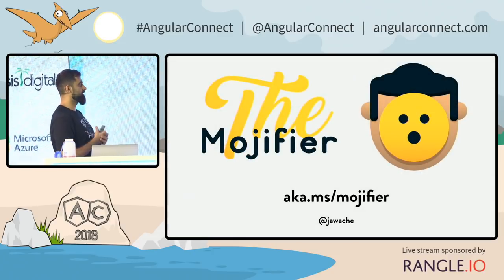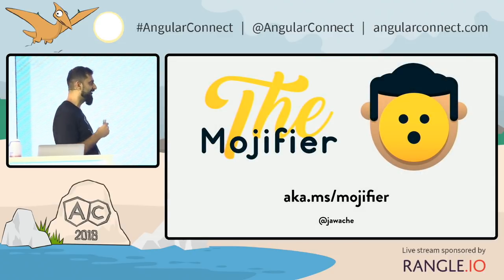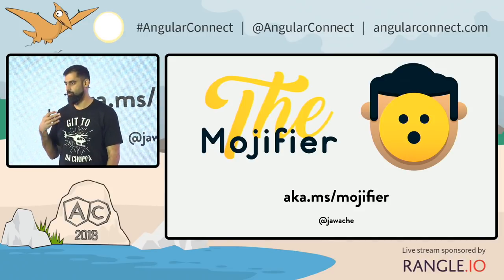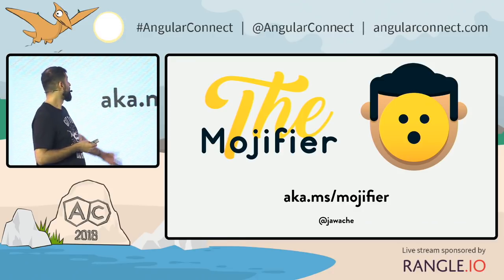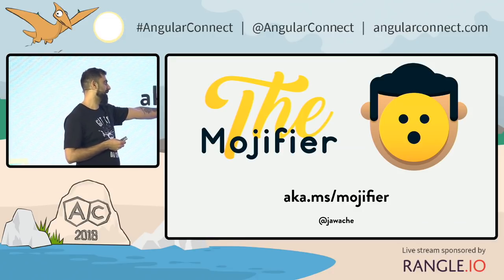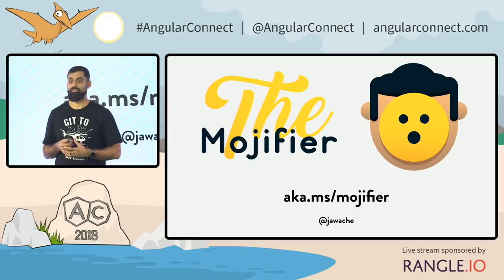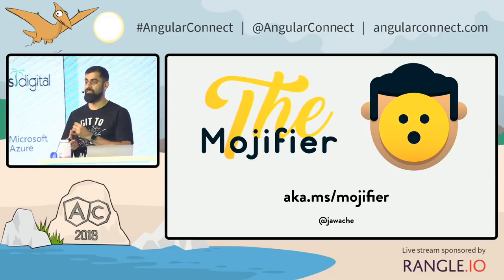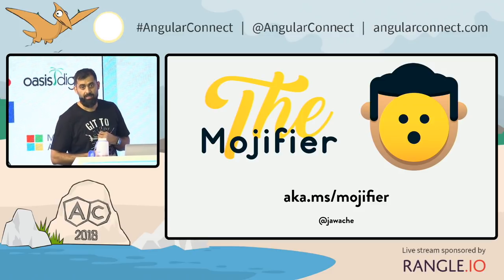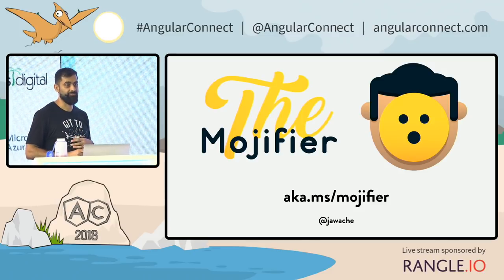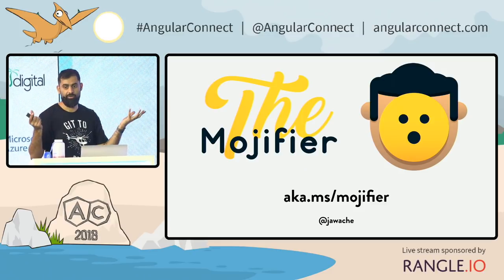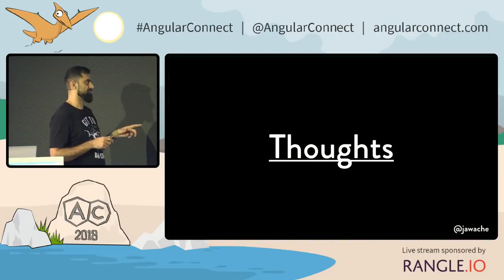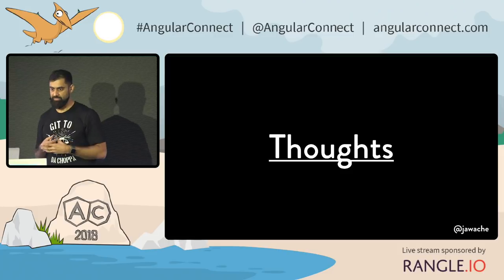One of the takeaways you can have for today: if you want to learn AI with JavaScript in the browser, I've released the Mojifier as a tutorial at aka.ms/Mojifier. You can go and figure out how to build your own AI-powered JavaScript Slack bot — and maybe add 'deal with it' sunglasses, or whatever.